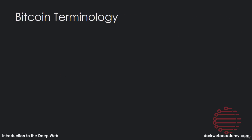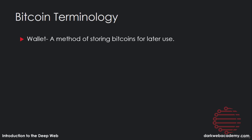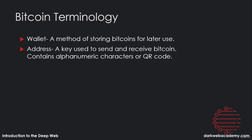Before you go online and use Bitcoin, it's important to know some popular terms and phrases surrounding the cryptocurrency. To start, you'll need to learn what a wallet is — a wallet is just a method of storing Bitcoins for later use, like a regular wallet where you put your money in, but it's digital. An address is a key used to send and receive Bitcoin. This key is alphanumeric and contains characters, or can be a QR code.